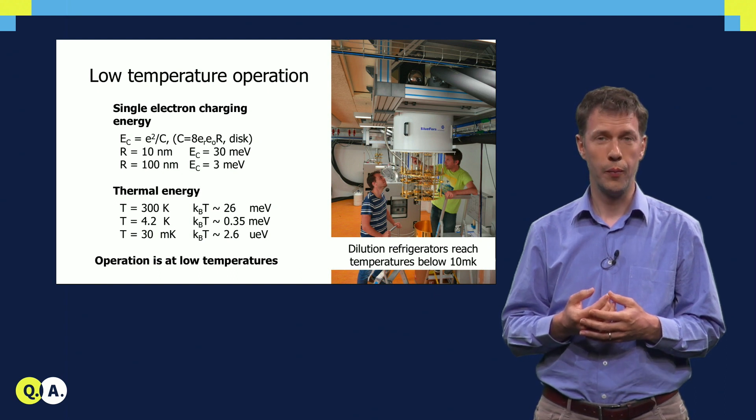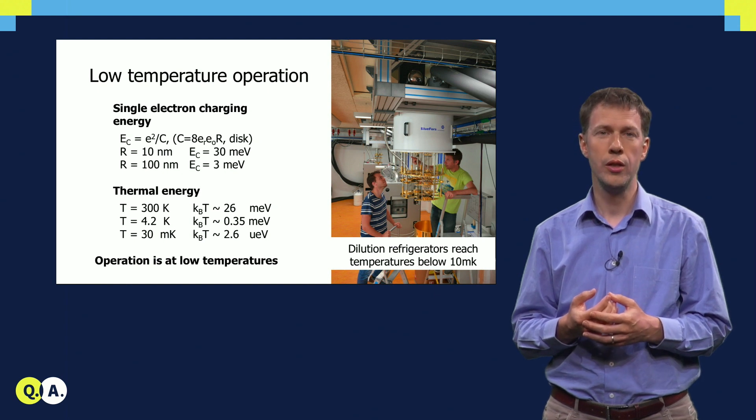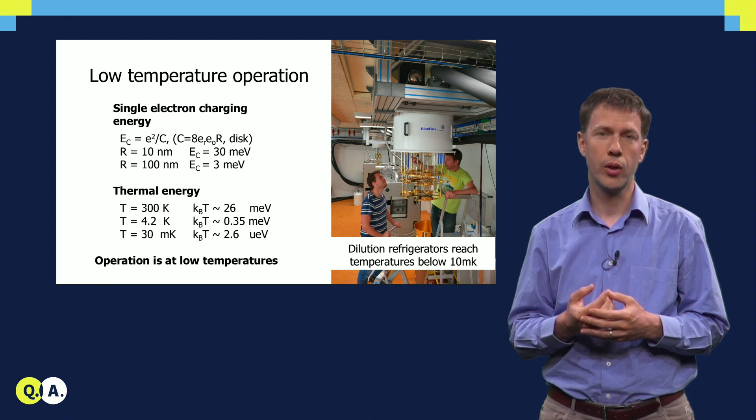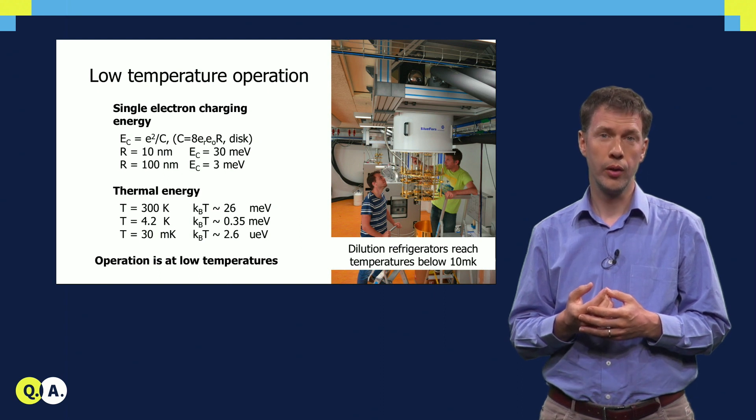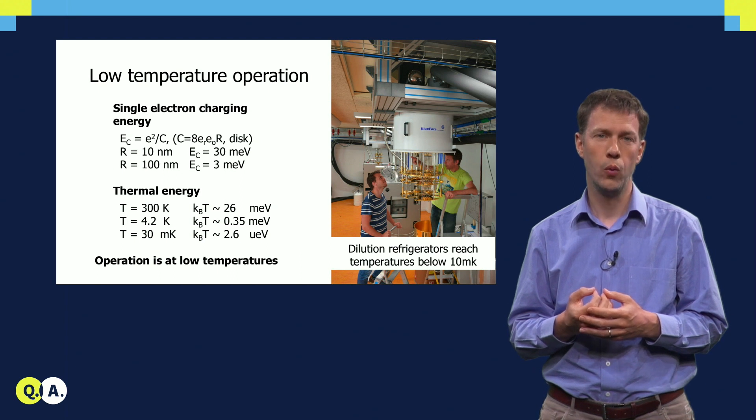To give some examples, for a small island with a radius of 100 nm, the charging energy is 3 meV. To put that number into perspective, the thermal energy at 4 Kelvin is 10 times less than this. So at 4 Kelvin it is actually possible to control the number of charges on these islands one by one.